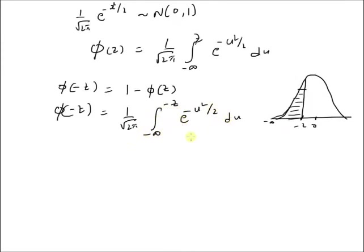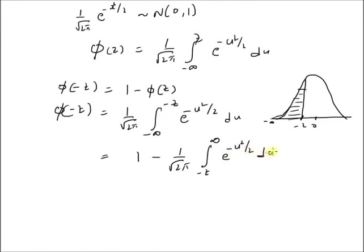Now by using this definition, we can rewrite this integral as the difference between the total area under the PDF minus the area under the unshared region. The total area of a PDF is obviously 1, minus the area of the non-shared region, which equals 1 over square root of 2π times the integral from z to infinity of e to the power of minus u squared by 2 du. So the area is given by this expression.